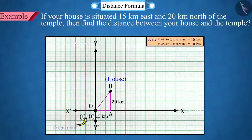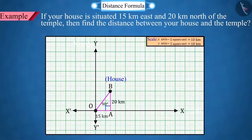Let the point O be located at the origin point 0,0. If point O is joined to the point B, then a right-angled triangle is obtained. The line OB tells the distance between the temple and the house.